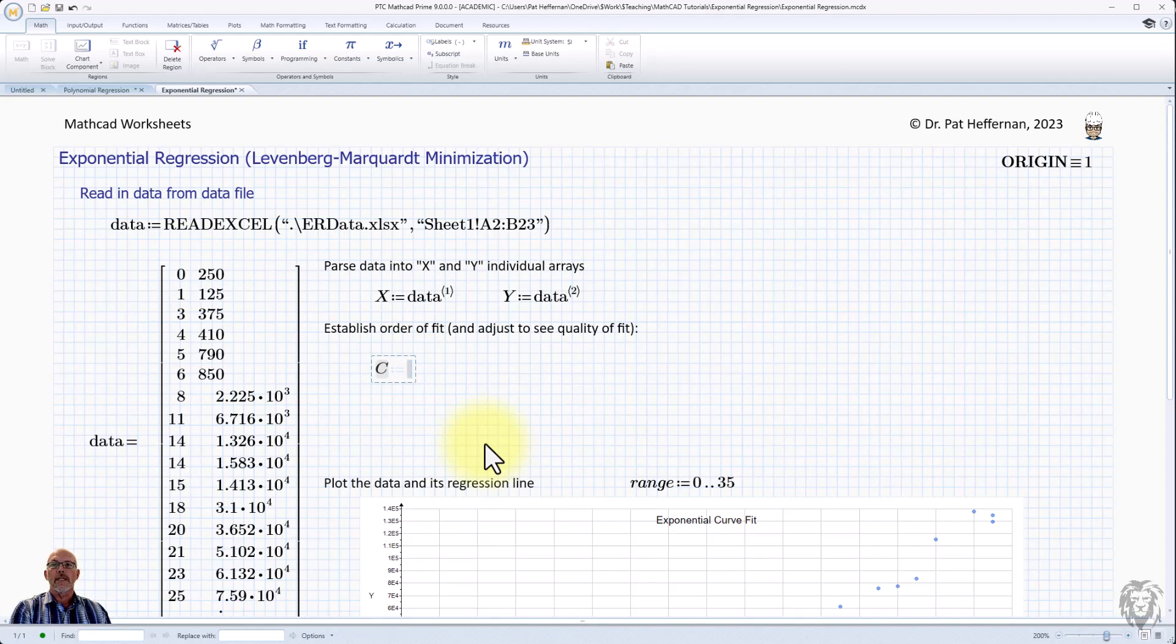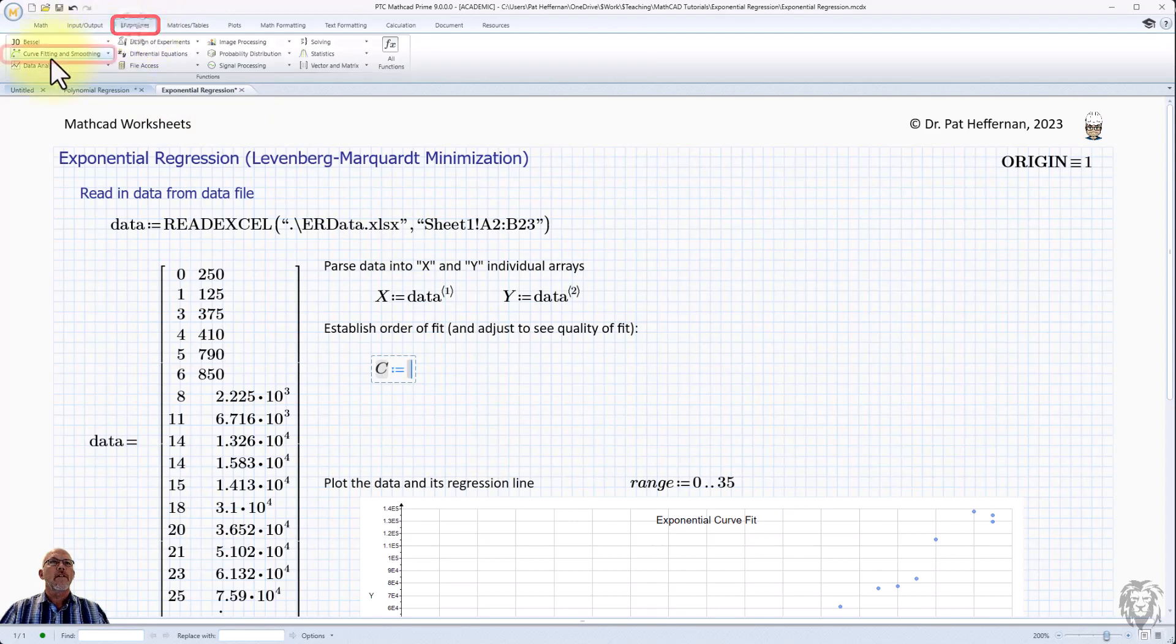We're going to set that equal to the exponential fit. We're going to go up to functions, up in curve fitting and smoothing. It's bouncing off my displayed area, but it's at EXP FIT in the second column, and we can put it in here.